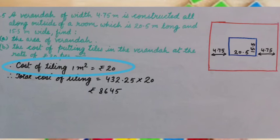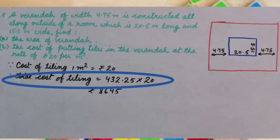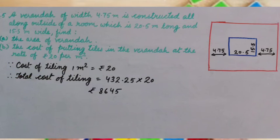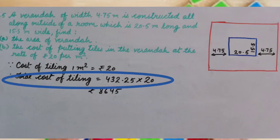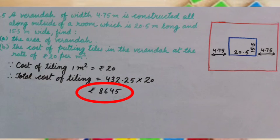Cost of tiling 1 meter square is given rupees 20. Therefore, total cost of tiling the veranda is 432.25 multiplied by 20, that is rupees 8645.